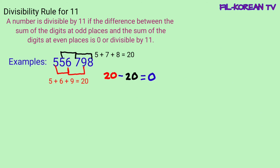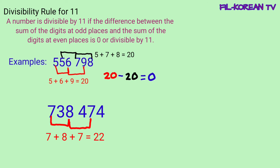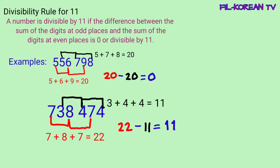Another example: 738,474. I-plus natin yung digits sa odd places: 7 plus 8 plus 7 equals 22. At i-plus din natin yung digits na nasa even places: 3 plus 4 plus 4 equals 11. I-subtract natin itong dalawa: 22 minus 11 equals 11. Ang difference nila ay 11 — ito ay multiple ng 11. Kaya naman, yung given number na 738,474 is divisible by 11.